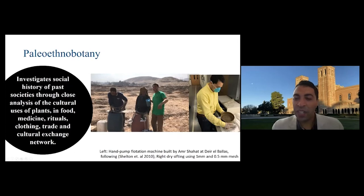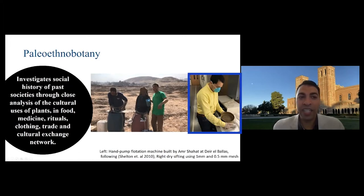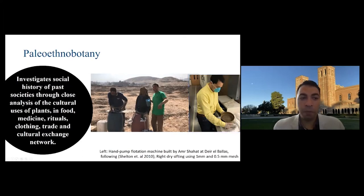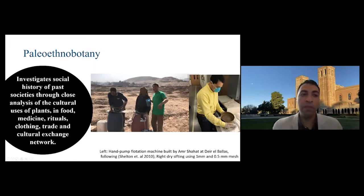The other way to find archaeobotanical remains is called dry sifting. We take the soil dry as it is and put it in multi-layers of sieves, with the bigger mesh size on top and the smaller mesh size — like one millimeter and 0.5 millimeter — at the bottom. The plant remains go down, and we usually find them in the two millimeter, one millimeter, and half millimeter mesh sizes.